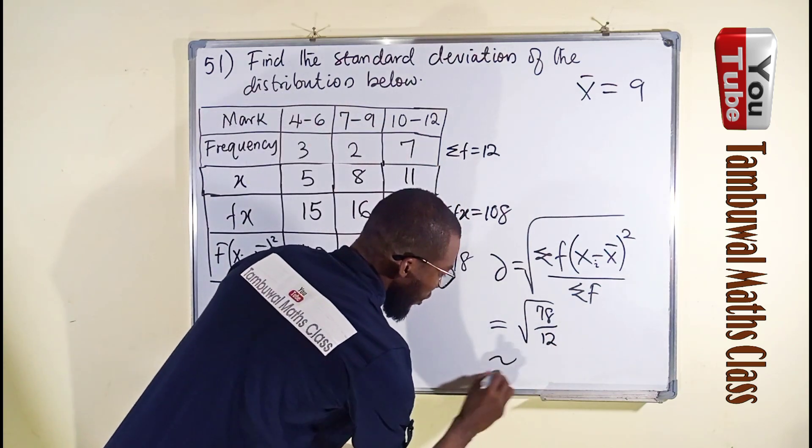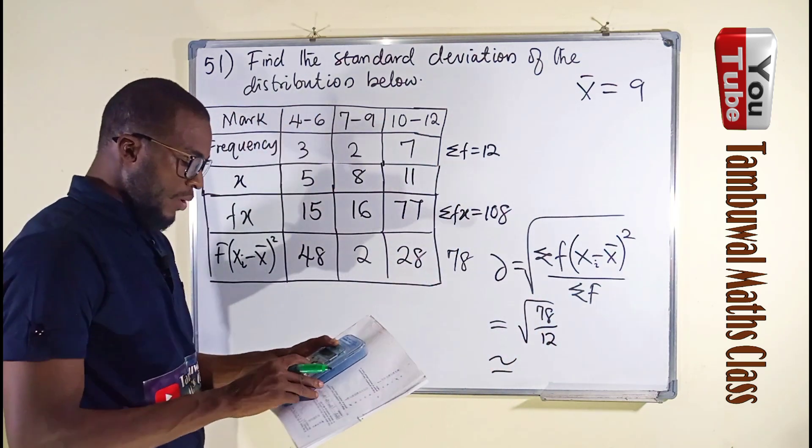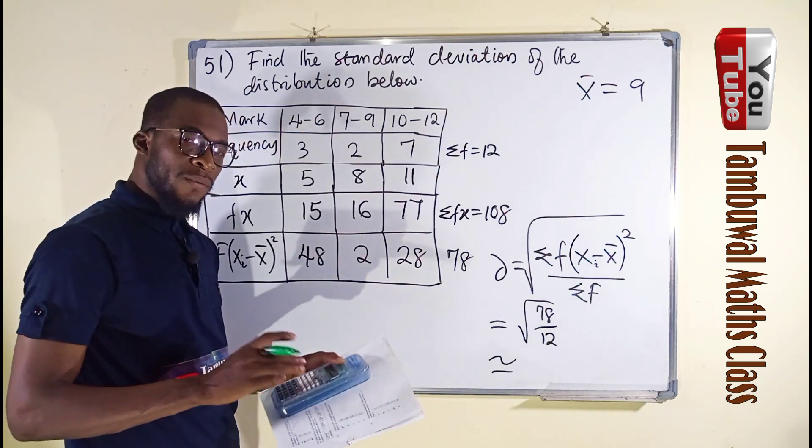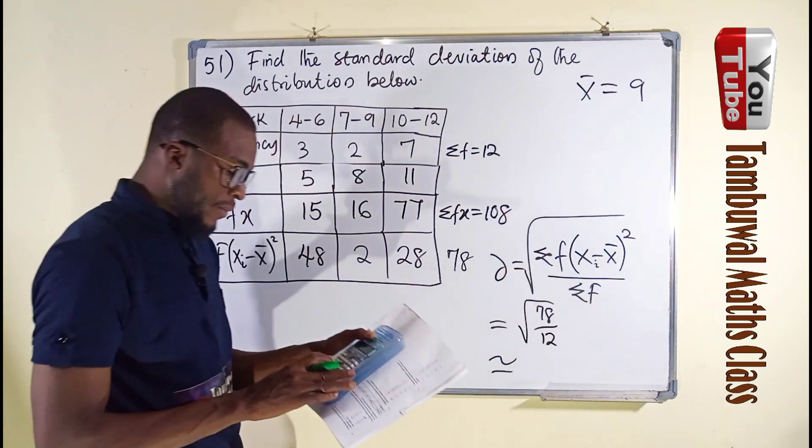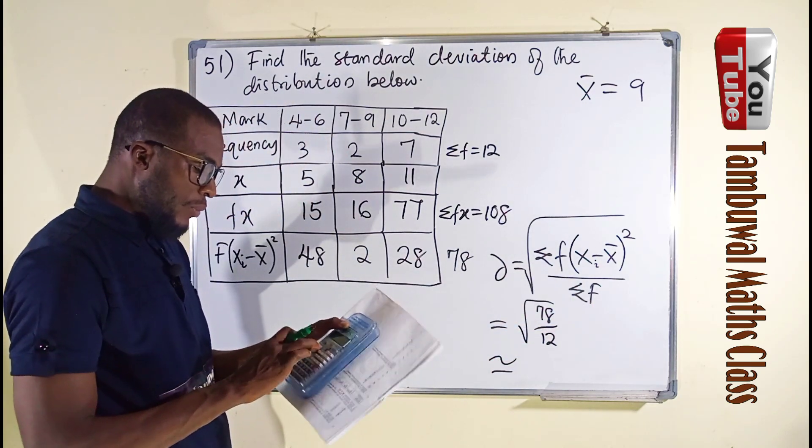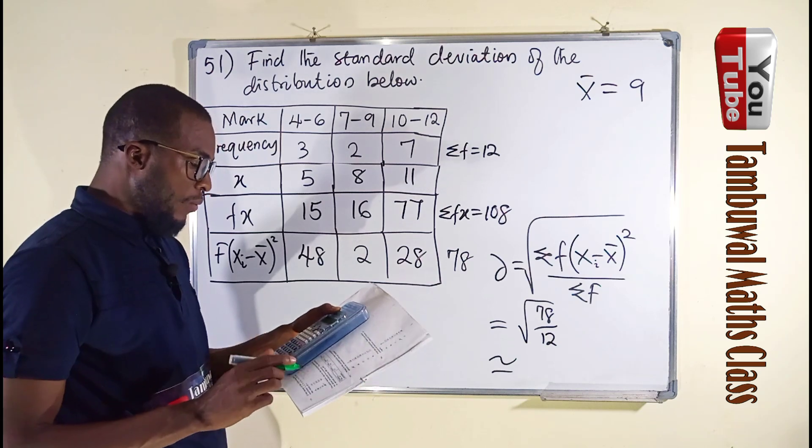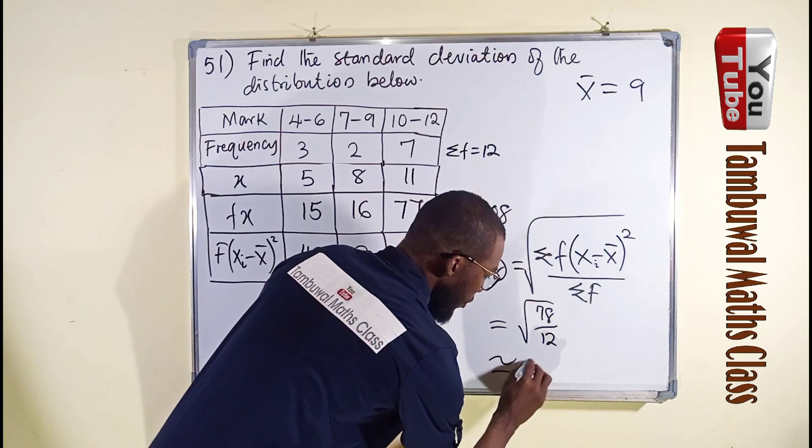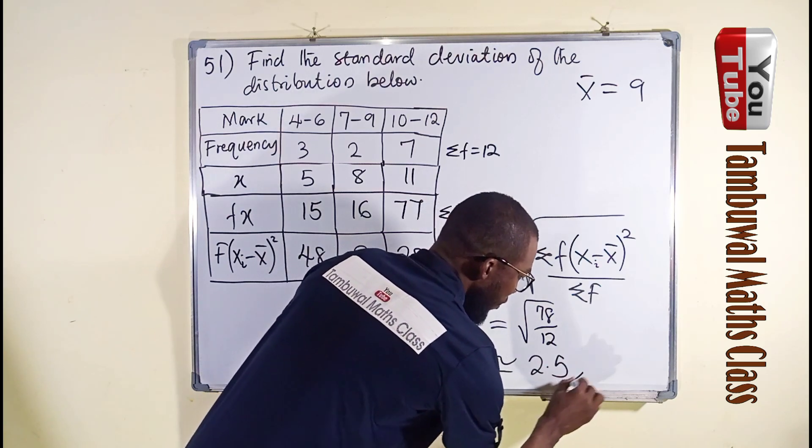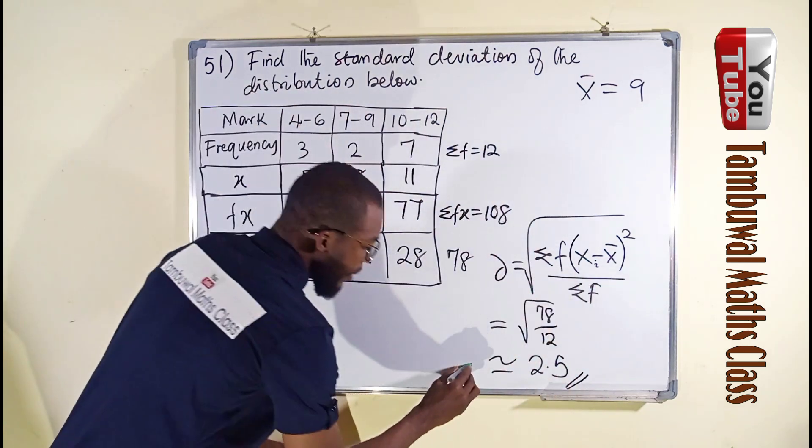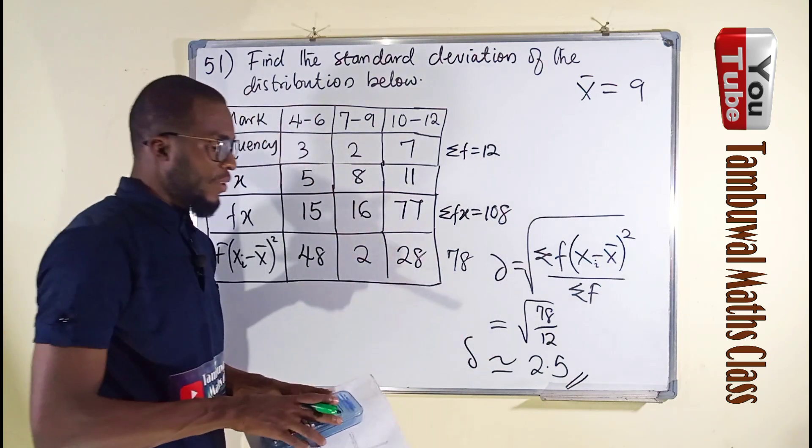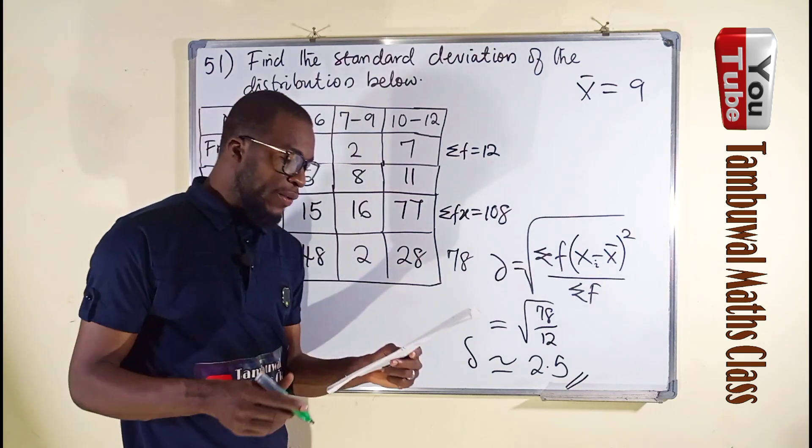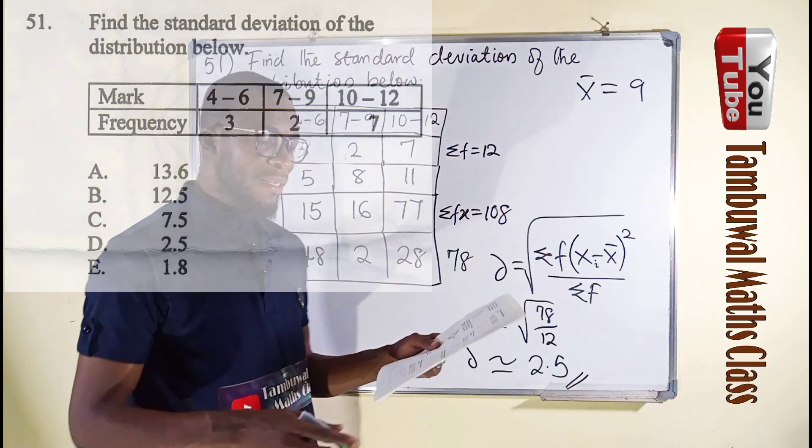Now, we are going to get an approximate result. We say 78 divided by 12. We obtain 6.5. Then we take the square root of 6.5. We have approximately equal to 2.5. This is our answer as standard deviation, which we have here as option D.